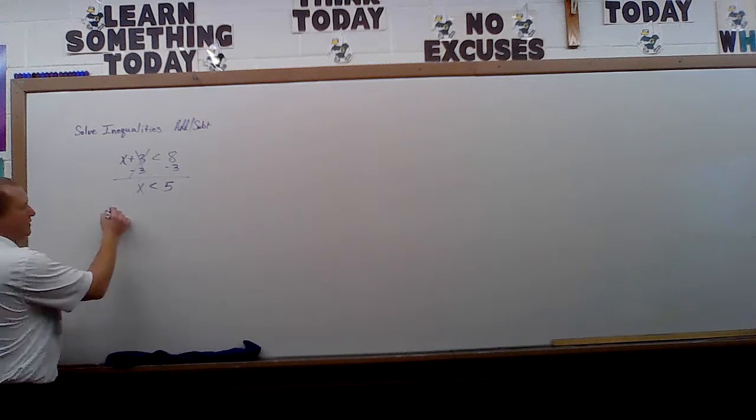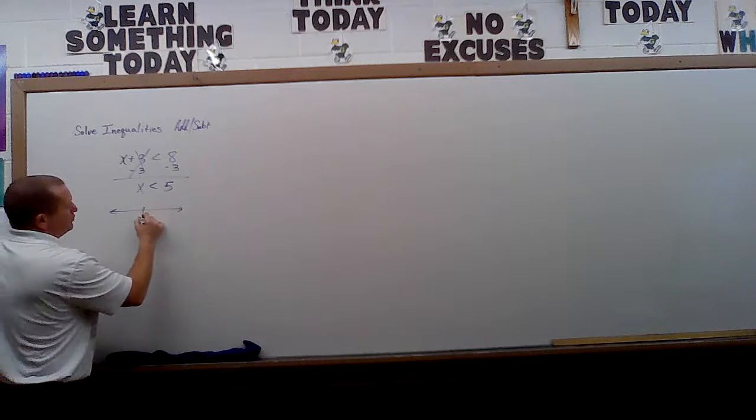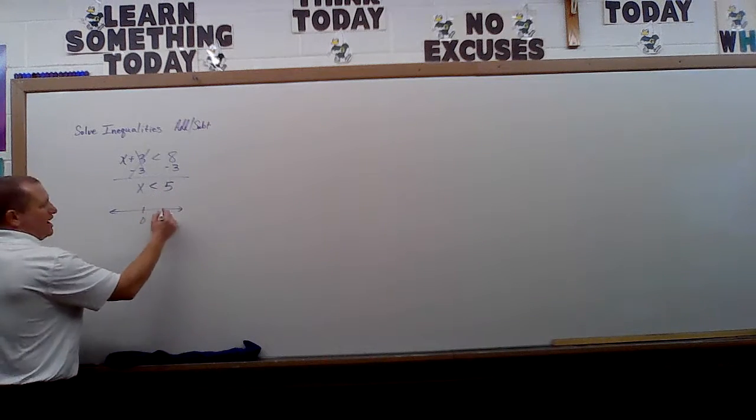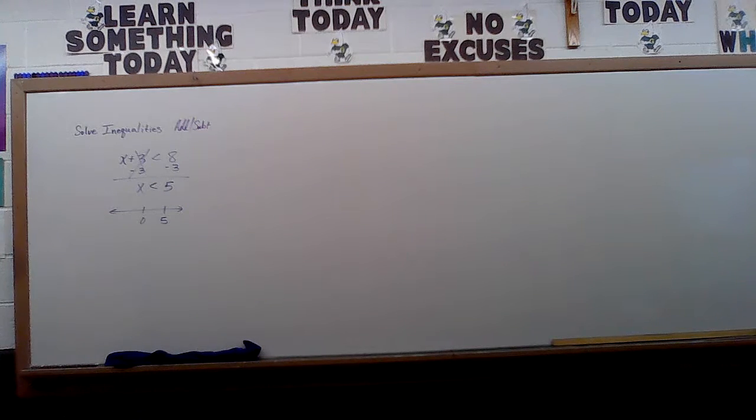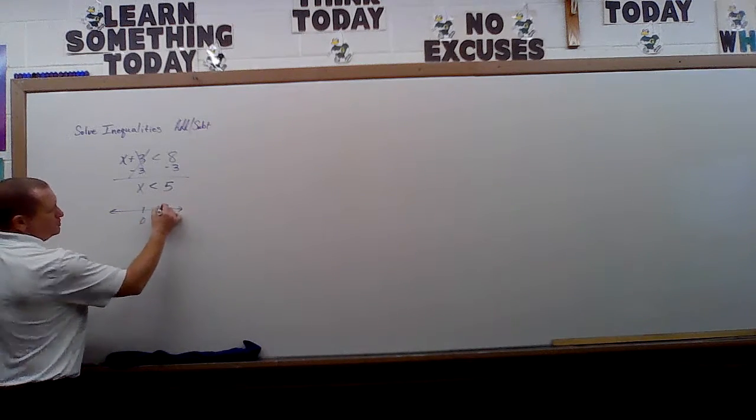Now if they ask you to graph it, don't forget to make your number line. Show me where 0 is. If you don't show me where 0 is, you're going to get it wrong. 5 is positive. I don't have to count out the spots, but open circle or a dot? Open circle. Why? Because it's not equal to. So we've got an open circle.